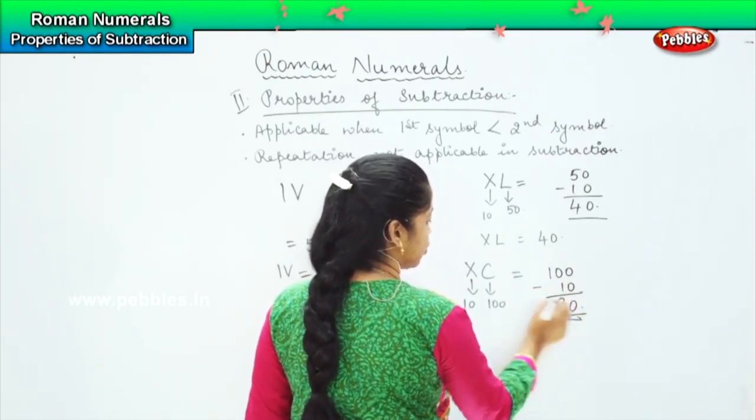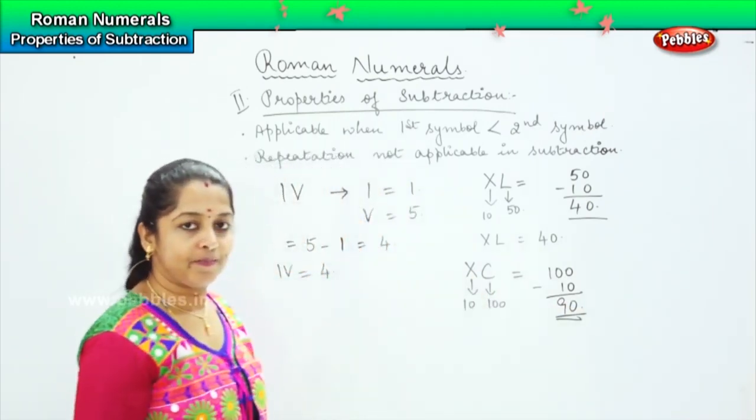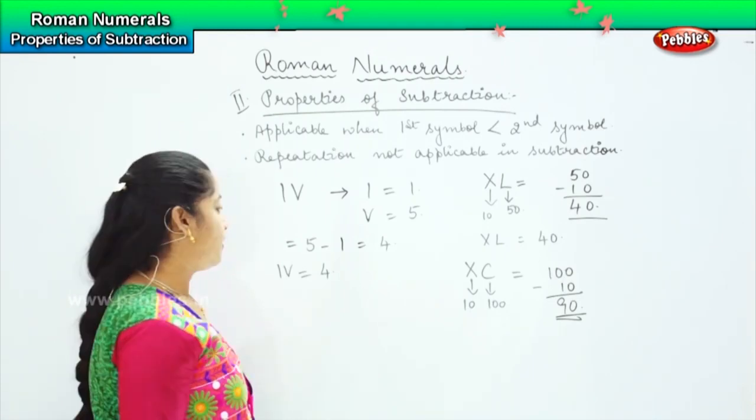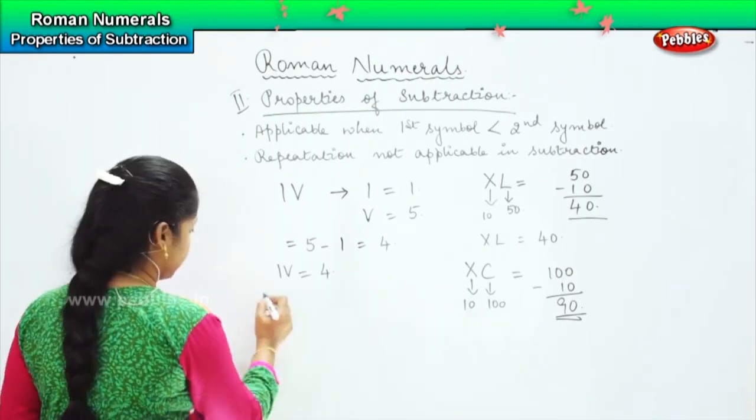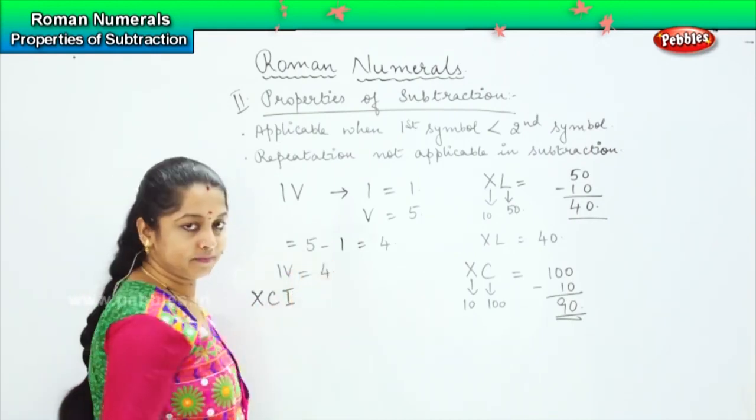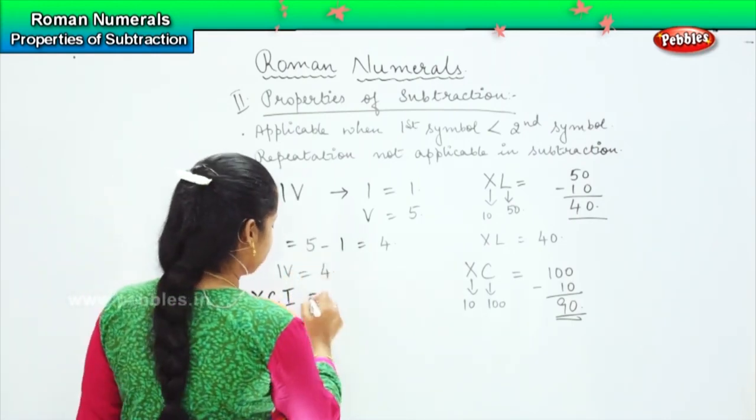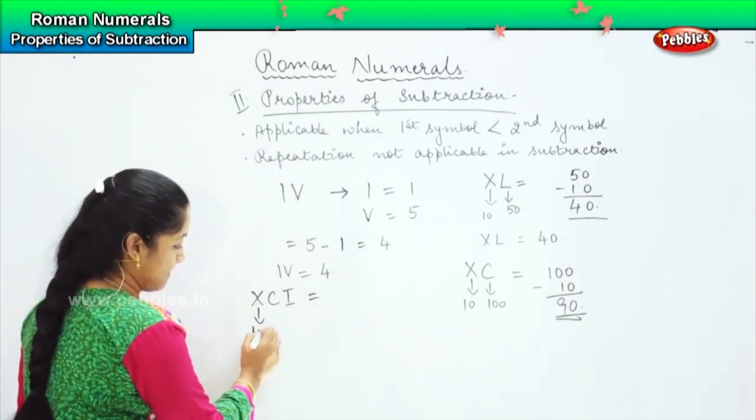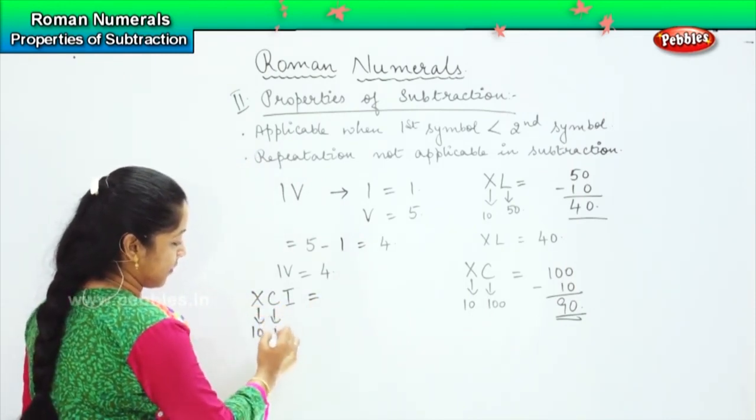Shall I give you one more? The next one is XCI. So is it possible for us to find the value? Children, X is 10, C is 100, and I is 1.